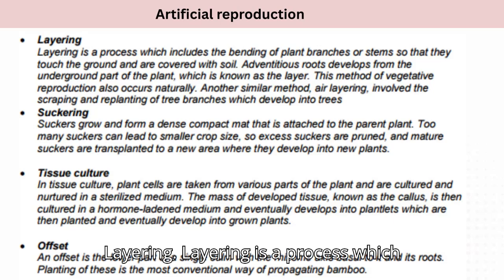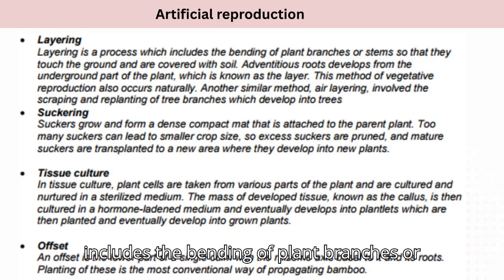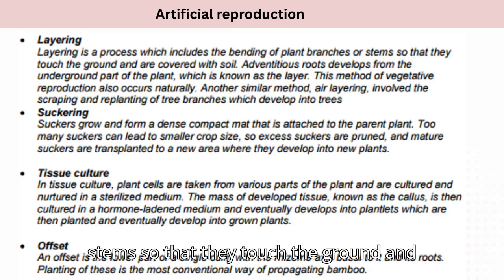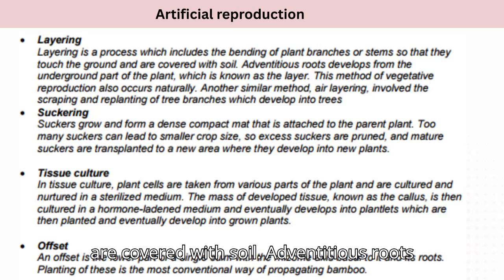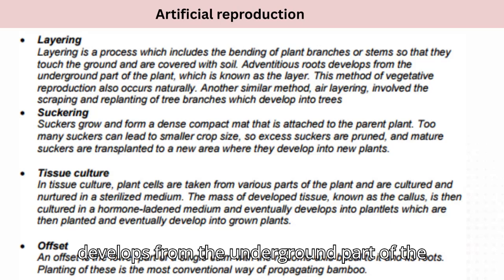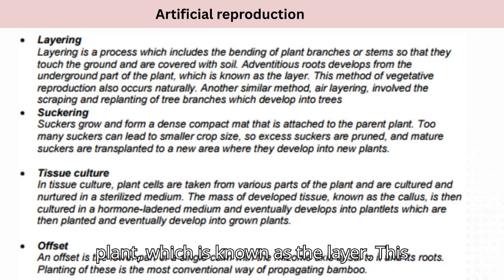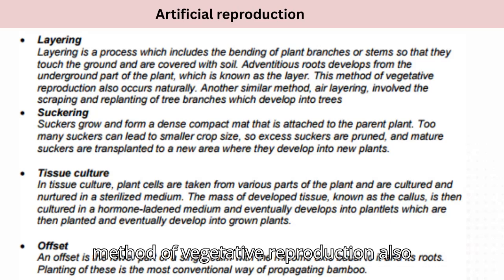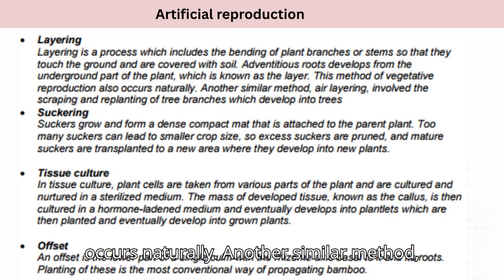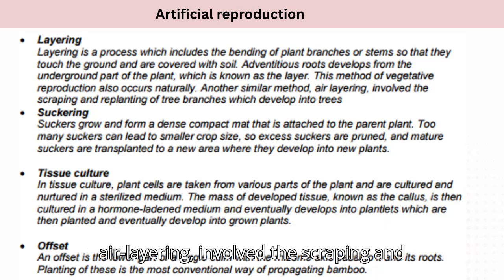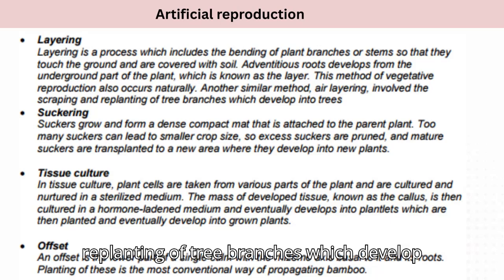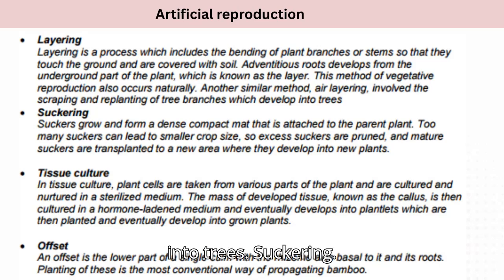Layering: layering is a process which includes the bending of plant branches or stems so that they touch the ground and are covered with soil. Adventitious roots develop from the underground part of the plant, which is known as the layer. This method of vegetative reproduction also occurs naturally. Another similar method, air layering, involves the scraping and replanting of tree branches which develop into trees.